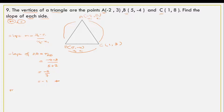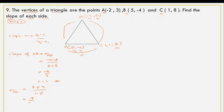So now we find the slope of BC. MBC equals y2 minus y1 divided by x2 minus x1. With B at (-4, 3) and C at (1, 8): that is 8 minus 3 divided by 1 minus minus 4, so 5 divided by 1 plus 4, which gives us 5 divided by 5, so MBC equals 1.